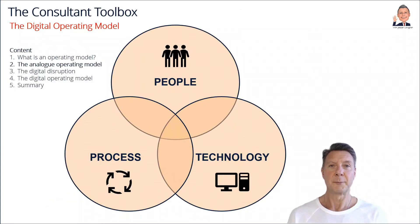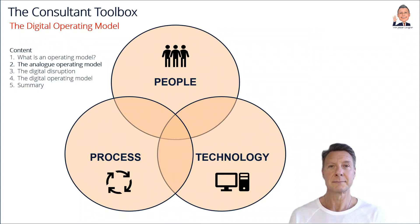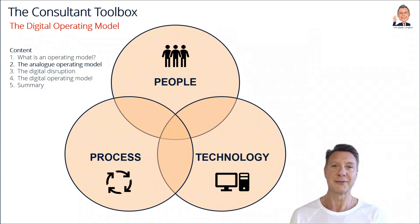This system is hidden in plain sight and you probably know it already as Process, People, Technology. But you may not know that this system is more than 150 years old and originated in the beginning of the Second Industrial Revolution, which started around 1870.